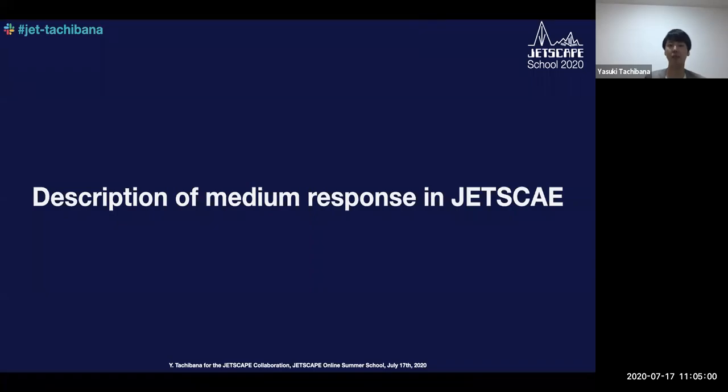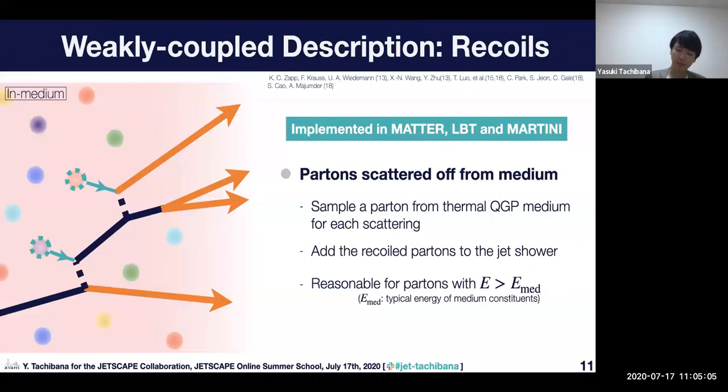So here, I'd like to explain how we implement such medium response effect in JETSCAPE. This is a very popular prescription to describe medium response effect based on weak coupling with recoils. This recoil medium response effect is implemented in MATTER, LBT, and MARTINI, which are included in the JETSCAPE package. I'd like to explain how it works.